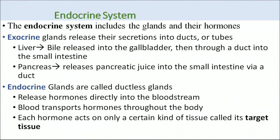The endocrine system contains a number of glands and their hormones. Two kinds of glands are incorporated into the endocrine system: the first is the exocrine gland, and the second is the endocrine gland.